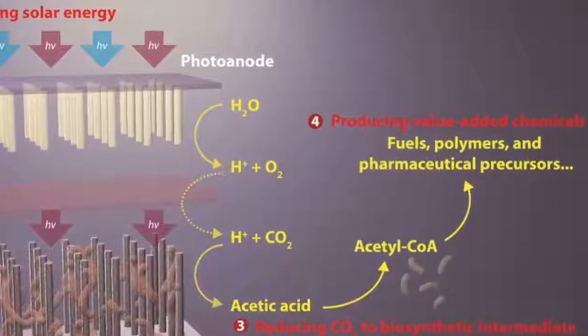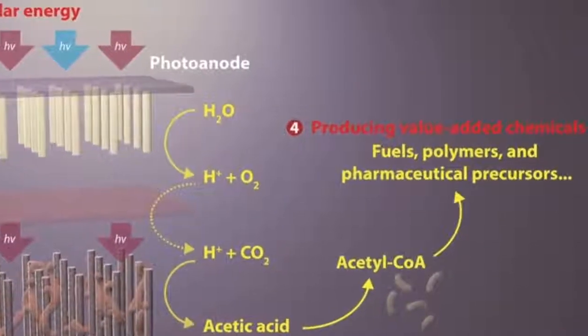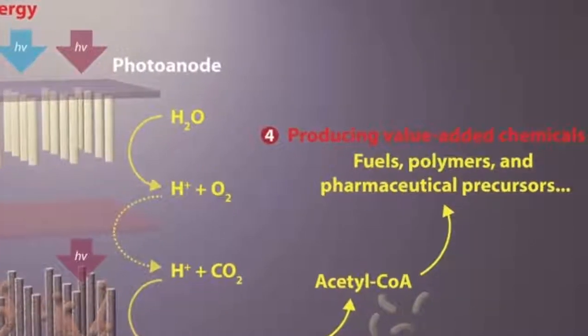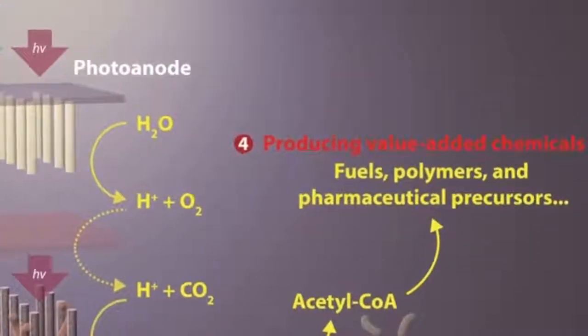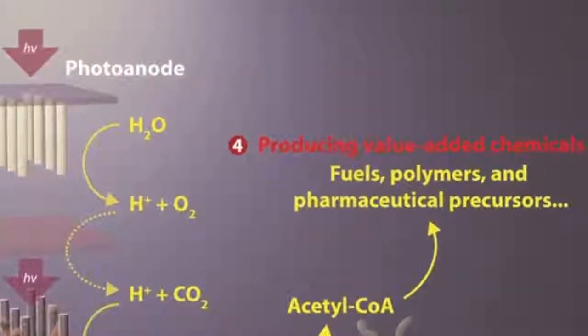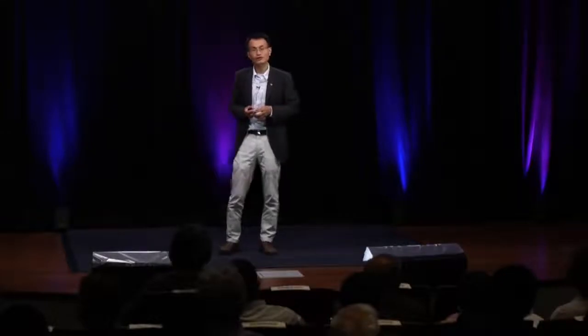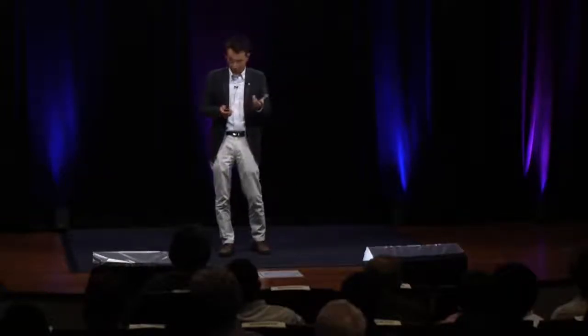We now have this hand-held device: if you bubble in CO2 and shine sunlight on it, we can produce chemicals, fuels, polymers, or even, in some cases, pharmaceutical intermediates to make drugs. Even better, our artificial photosynthetic system, in terms of its solar-to-chemical energy conversion efficiency, is already better than nature.